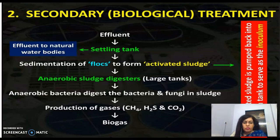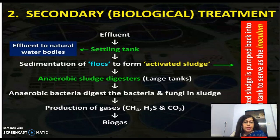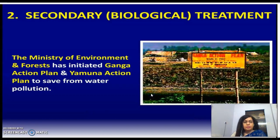In the anaerobic sludge digesters, anaerobic bacteria digest the sludge — the bacteria and fungi. During this breakdown, gases such as methane, hydrogen sulfide, and carbon dioxide are produced. This mixture of gases is called biogas.